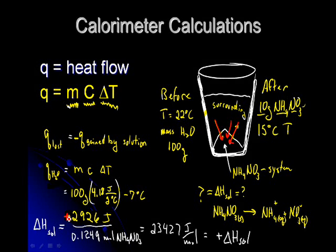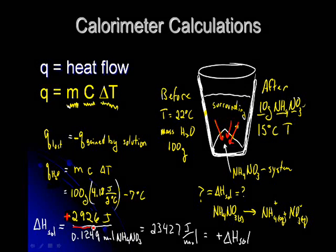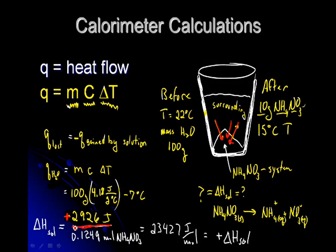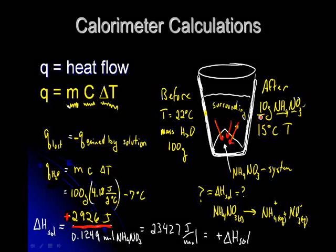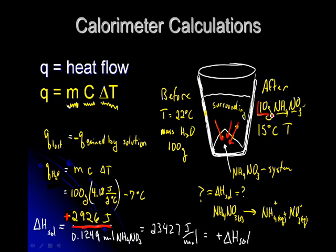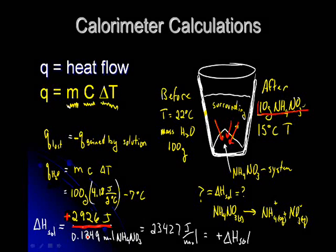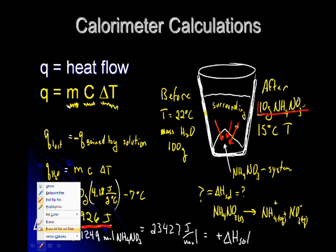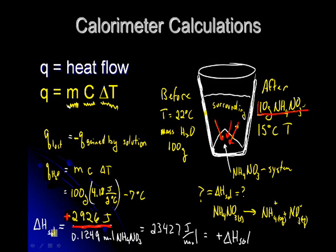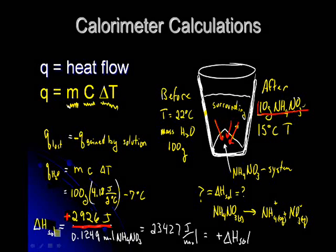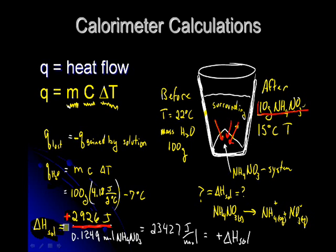So if we take the joules of energy and we divide that by moles, well we had 10 grams of ammonium nitrate. You can convert that to moles, and that will give you 0.1249 moles of ammonium nitrate.